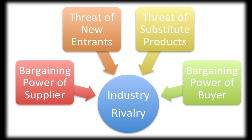Porter's Five Forces can be applied in nonprofit and public health settings by analyzing outside influences. For example, a supplier could be a vaccine company. If you are a public health program providing free vaccines and only one company supplies that vaccine, that company has strong bargaining power. However, if multiple companies offer the vaccine, your organization has the power to bargain with different suppliers. As a public health leader, you will face dynamic situations requiring you to be efficient and effective.